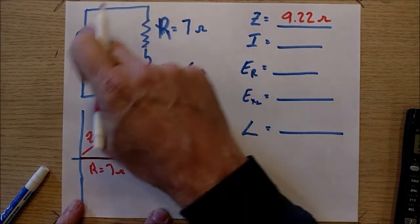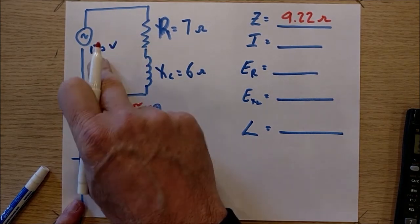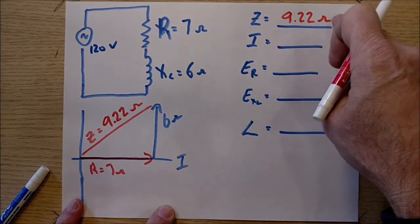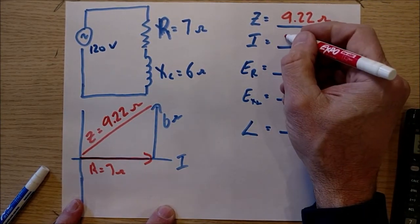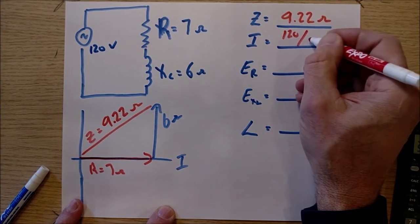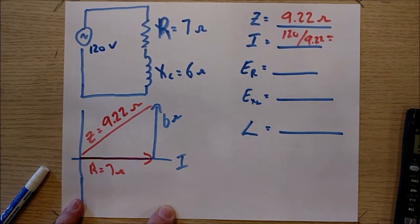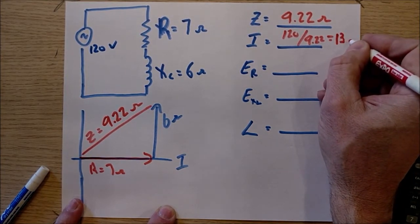The next thing we're going to do is calculate the current in the circuit. We're going to do it using Ohm's law. The circuit current will always be E total divided by R total in quotes. It's now Z. So this is going to be 120 over 9.22. 120 divided by 9.22 equals, looks like 13 amps.